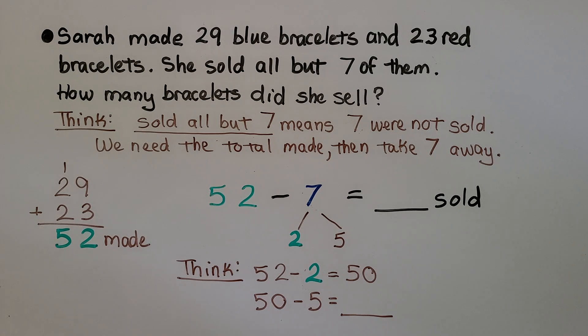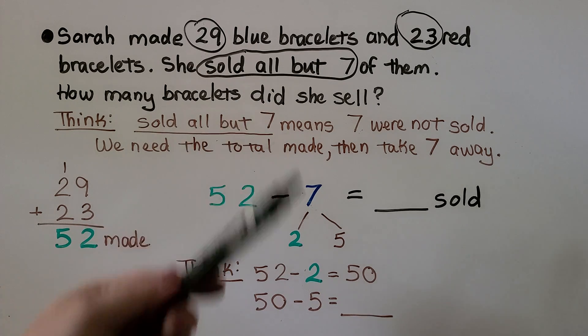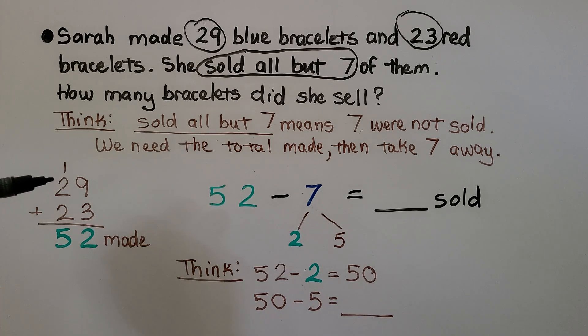We can circle our important information. There were 29 and 23. She sold all but 7. We can get the total of 29 and 23.